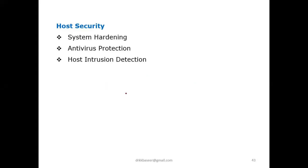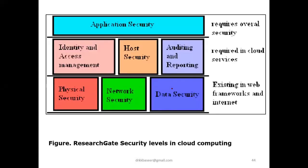Host security has three areas: system hardening, antivirus protection, and host intrusion detection. Before starting this topic, let me show you a figure that illustrates the entire process. It covers the first few topics: physical security, network security, and data security. The figure is a little blurry, but it shows physical security and network security at the layer of web frameworks.